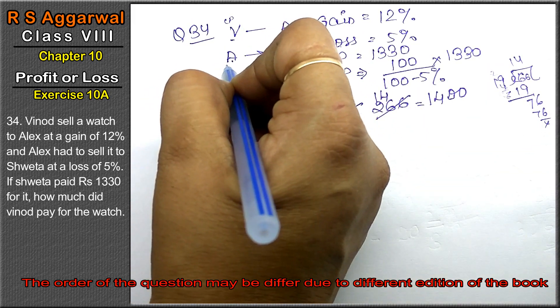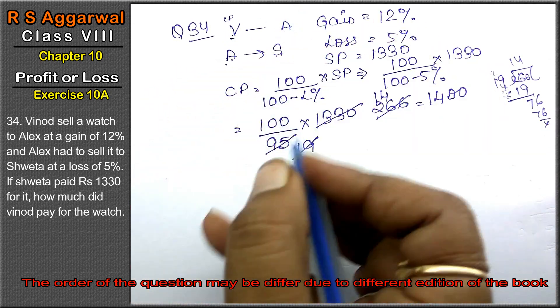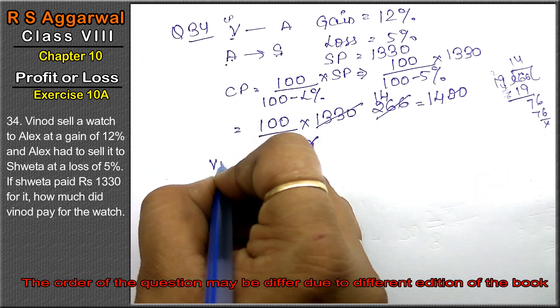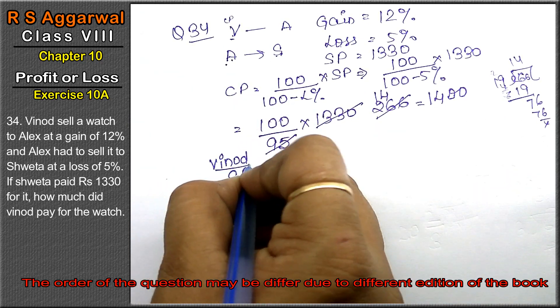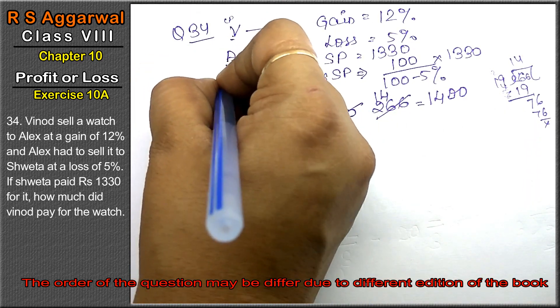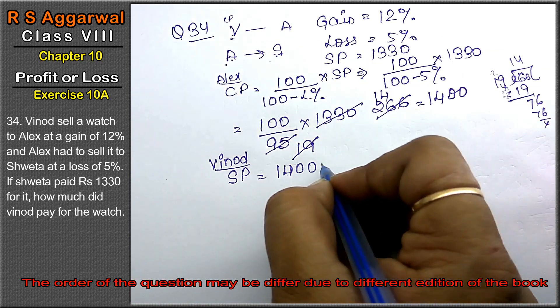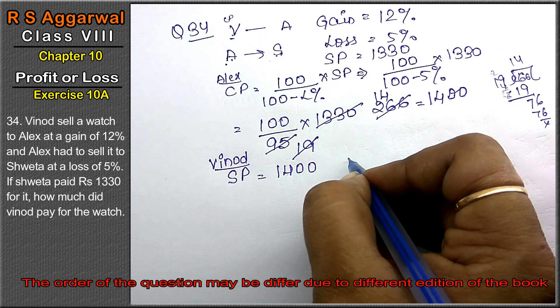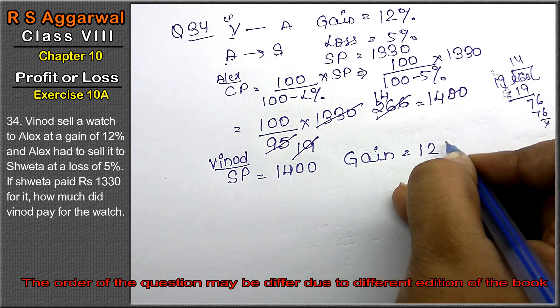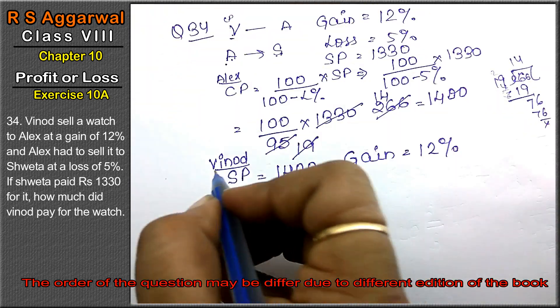Now what was Alex's CP was Vinod's SP. Right friends, for Vinod, SP is 1400 and this is for Alex. Right? And the gain he got was 12 percent. Gain equals 12 percent. So what do we find? We find the CP.